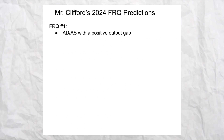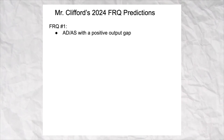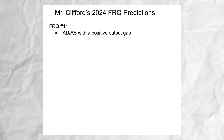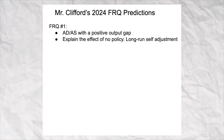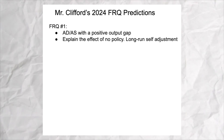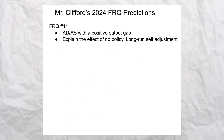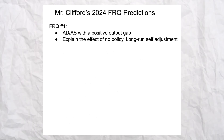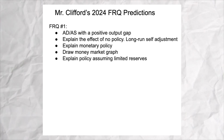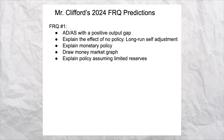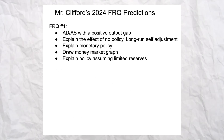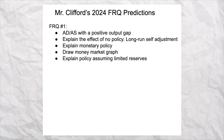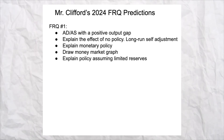Here are my predictions. Free response number one is going to be aggregate demand and supply showing a negative output gap. They'll have you draw the graph in part A, then explain what's going to happen with no policy and a long-run self-adjustment. They're going to talk about monetary policy, have you draw the money market graph, and explain if there are ample reserves or limited reserves what policy would work.